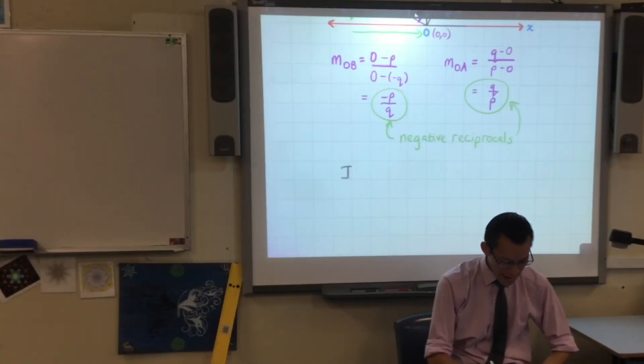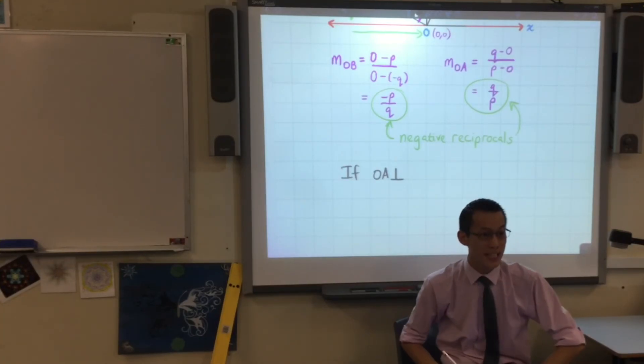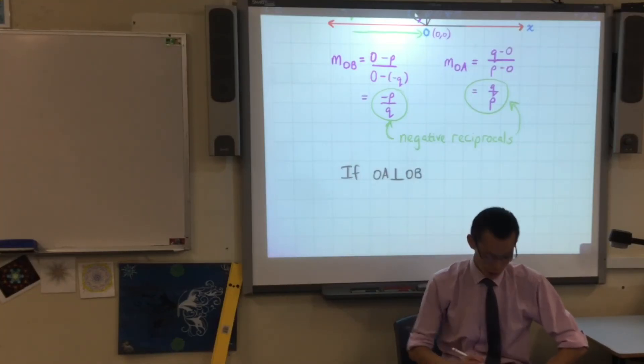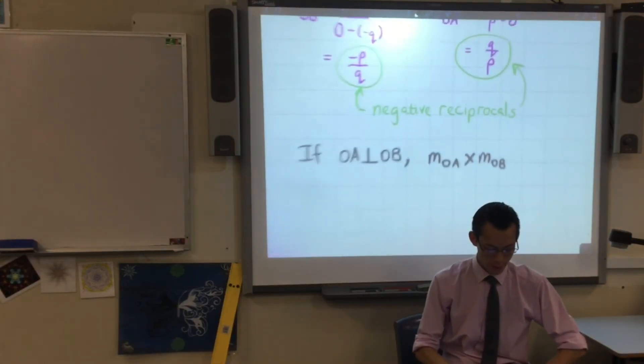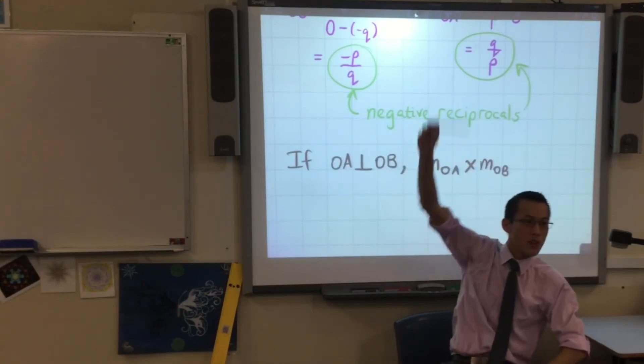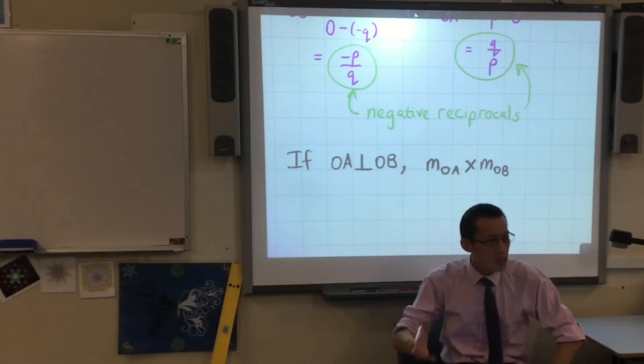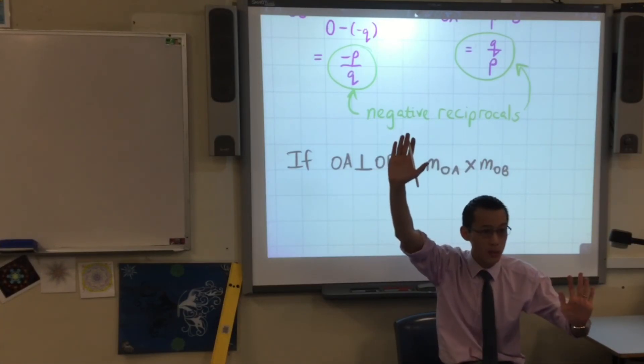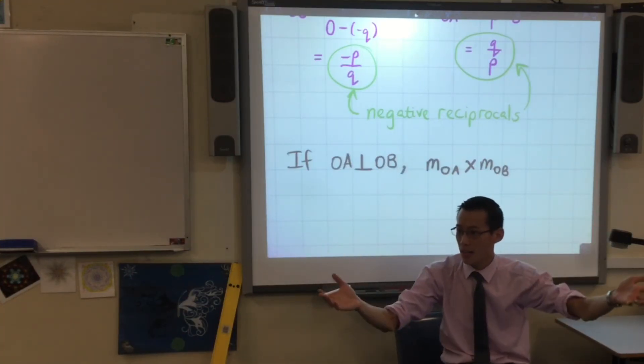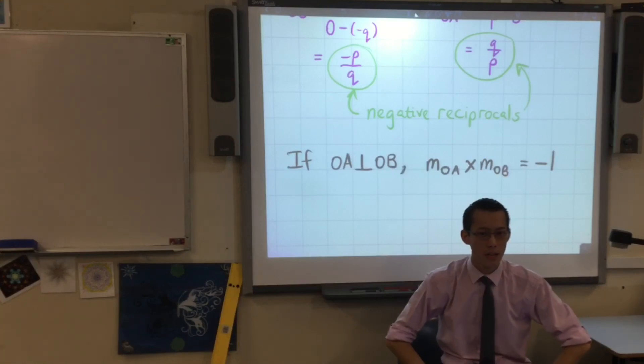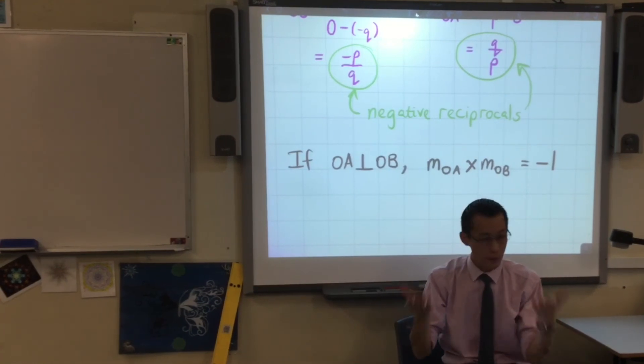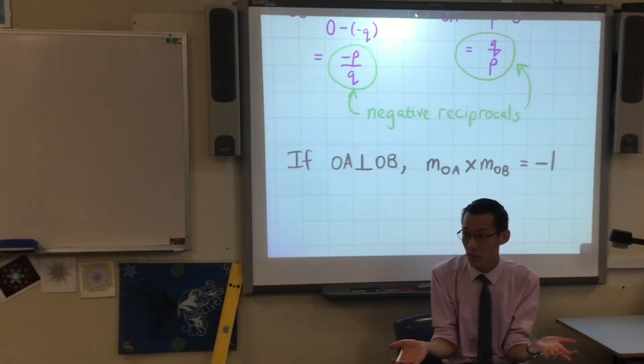If OA is perpendicular to OB, if the two lines meet at right angles, then when you take those gradients, the first gradient and the second gradient, what happens when you multiply them? Have a look at the two numbers. This guy and this guy. What happens when you multiply them together? Well, the Q's cancel out with each other, right? You notice the Q on the top and the bottom? And then the P's also cancel out because there's one on the top and the bottom. The only thing that gets left behind is that minus sign. So, in fact, you get negative one. Do you remember the example I just did? Two times negative a half. If you multiply those together, sure enough, you get negative one, don't you? Does that make sense?